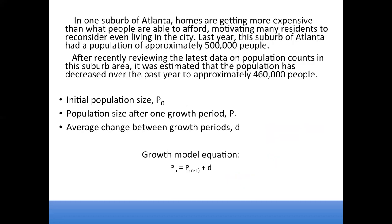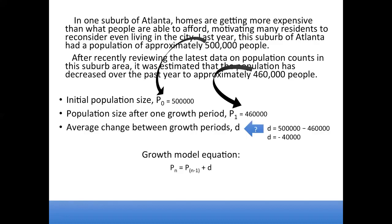Another example where the population is declining is given here. Reading from this example, we have an initial population of 500,000 and a population after one year of 460,000, for which the common difference would be negative 40,000 — in other words, the population is decreasing by 40,000 people per year. That can then be used in the general growth model equation.